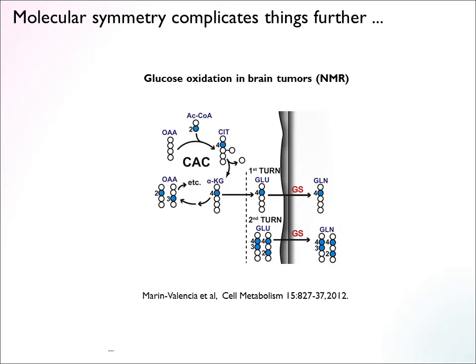Here is an example from the published literature looking at glucose oxidation in brain tumors using NMR. People had previously seen that this type of cancer cell used glutamine as a substrate in vitro — cells tended to take up glutamine and oxidize it for energy. But when studied in vivo in actual tumors, it was kind of the other way around: glucose formed acetyl-CoA, which was used to form substrates to provide energy and also synthesize glutamine. To see and interpret this data, you find that labeled acetyl-CoA forms a variety of patterns in glutamine, and to account for these patterns, you have to consider the fact that acetyl-CoA makes multiple turns in the TCA cycle.